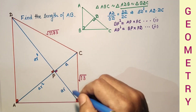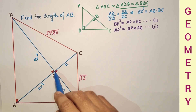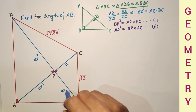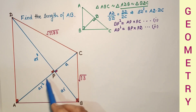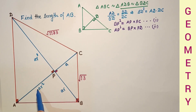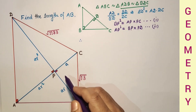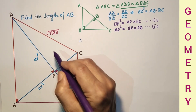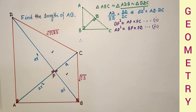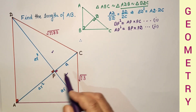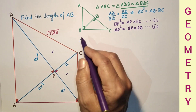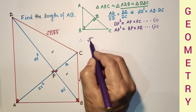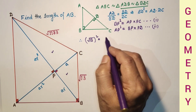Because BP squared equals the product of AP and PC, we have (ar)² = a² r². Using Pythagoras theorem, BC squared equals BP squared plus PC squared. So (√13)² = BP² + a². That gives 13 = a²r² + a². After taking a² common: 13 = a²(1 + r²). That is equation three.